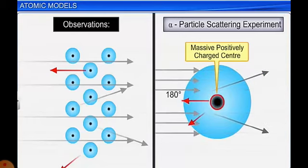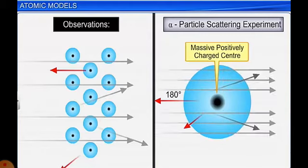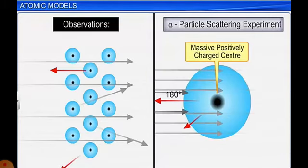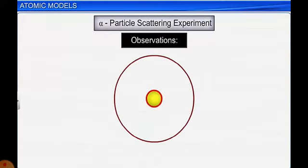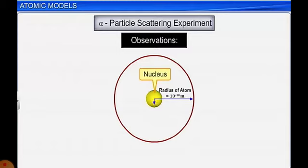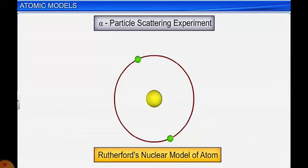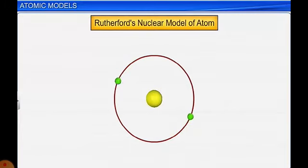A massively positive charge is concentrated at the center of the atom — when alpha radiation strikes this center it deflects by 180 degrees. The space where positive charge is condensed is called the nucleus, where protons are arranged. The radius of an atom is 10 to the power minus 10 meters, while the radius of the nucleus is only 10 to the power minus 15 meters — very very small. All positive charge is concentrated in this tiny nucleus, while electrons revolve around it.